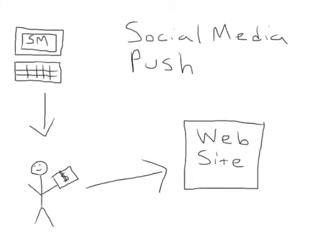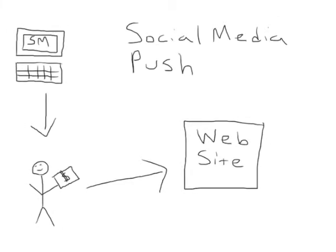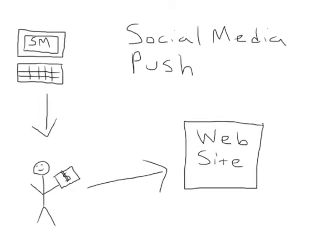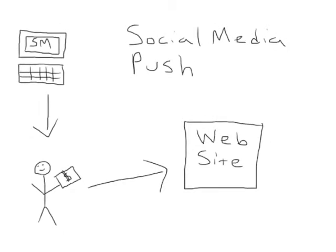An example of a Facebook or Twitter promotion can be linking to the homepage through one of the sites or offering followers discounts or coupon codes.